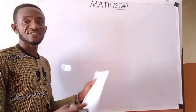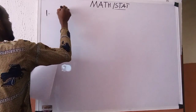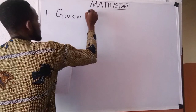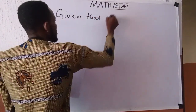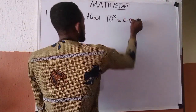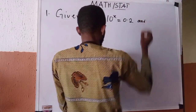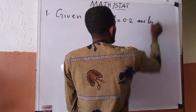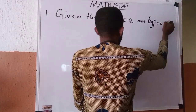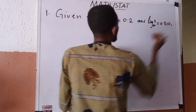The first question says: given that 10 raised to the power x equals 0.2, and log base 10 of 2 is given as 0.310. Find x.